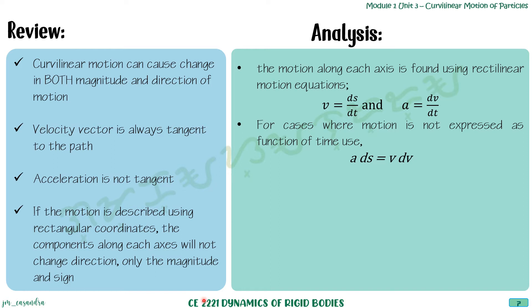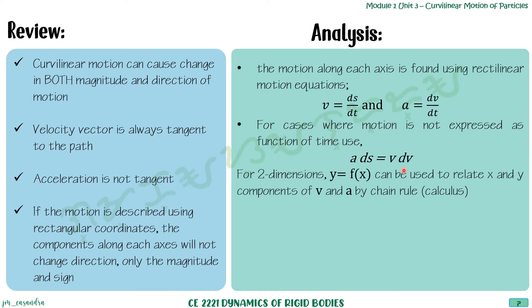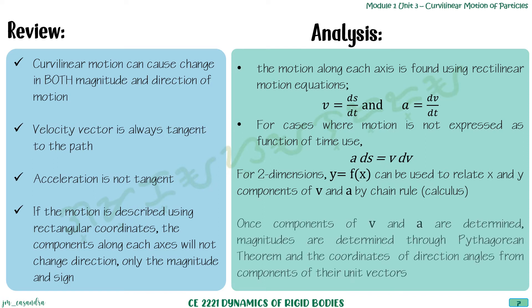For two dimensions, y as a function of x can relate the x and y components. V and a are solved through chain rule. Once components of v and a are determined, magnitudes are solved through Pythagorean theorem, and direction angles are found from the unit vectors.